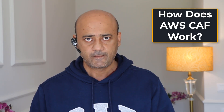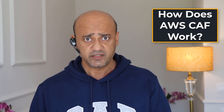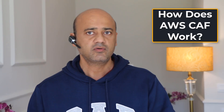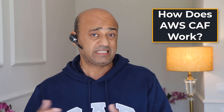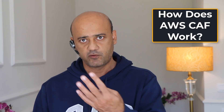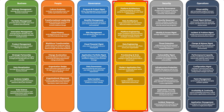The third perspective is Governance, which helps you orchestrate your cloud initiatives while maximizing organizational benefits and minimizing transformation-related risks. Common stakeholders in this perspective include the CIO, CTO, CFO, and Chief Data Officer.